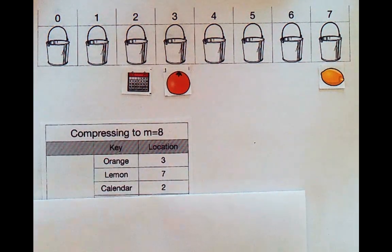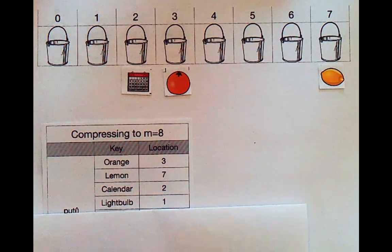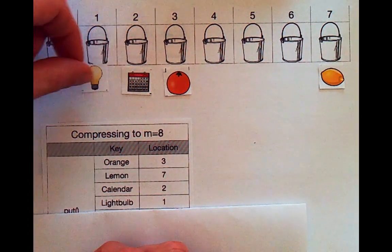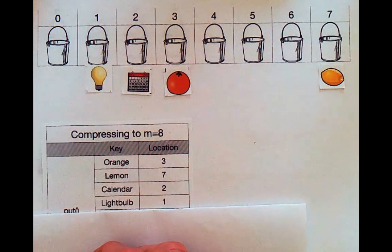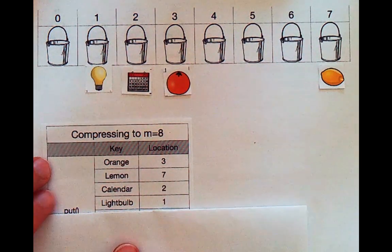So our new and improved bucket array looks something like this. And now we can continue adding items. So our light bulb belongs in bucket one. We can think about our load factor. We've got four items in eight buckets, so our load factor is 50%.